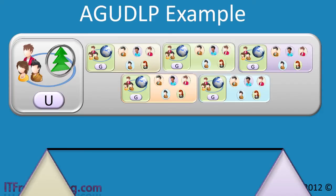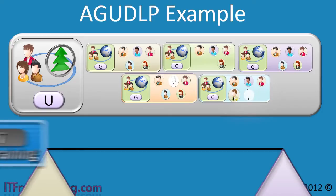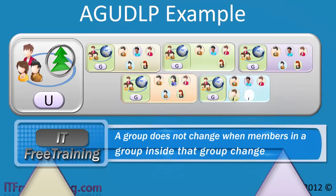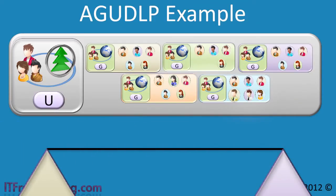Notice that now the global groups have been put into universal groups. The universal group only changes when a global group is removed or added to it. Users can be changed in the global groups as often as required. Each time a user is added or removed from one of the global groups, the universal group does not change. Since the universal group is not changing, this significantly reduces the amount of replication that occurs in your forest.